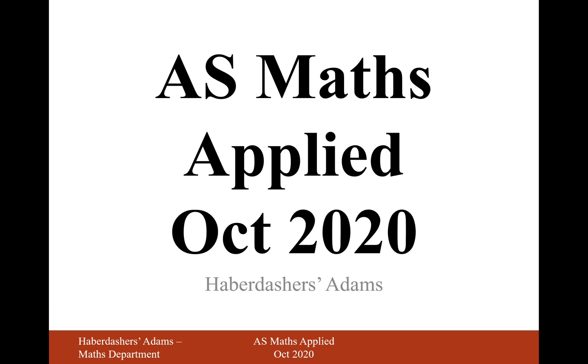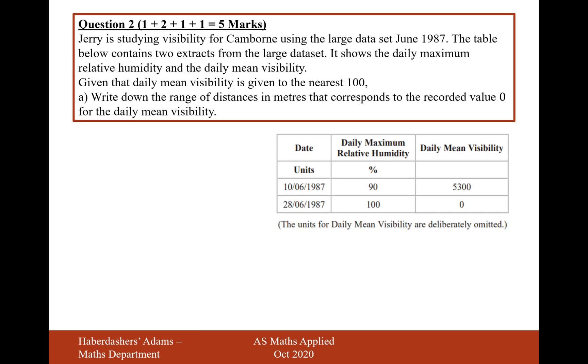Hello there, welcome to the October 2020 Applied Paper. We're looking at question 2. Jerry is studying visibility for Camborne using the Large Data Set, June 1987. The table below contains two extracts from the Large Data Set. It shows the daily maximum relative humidity and the daily mean visibility. Given that daily mean visibility is given to the nearest 100, write down the range of distances in meters that correspond to the recorded value 0 for the daily mean visibility.